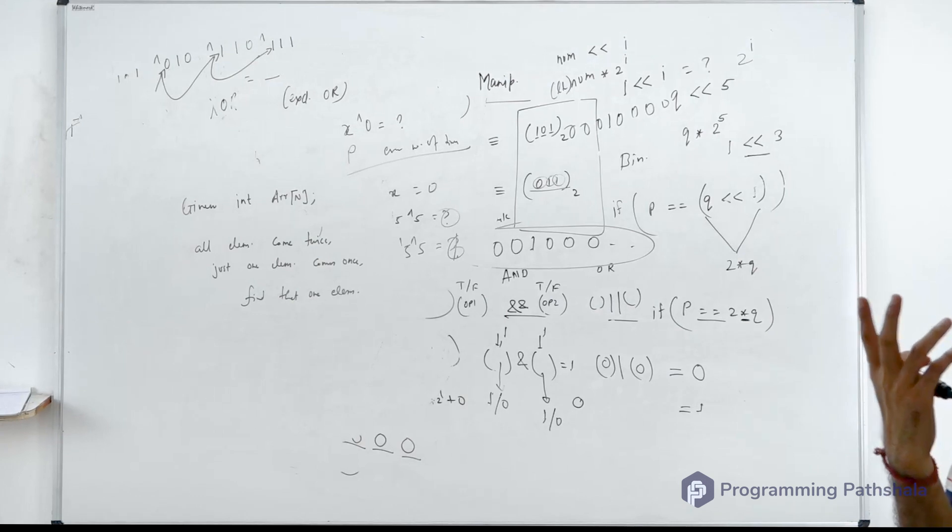All elements come twice, just one element comes once. How can I find that element? XOR of all. It will be so, right?